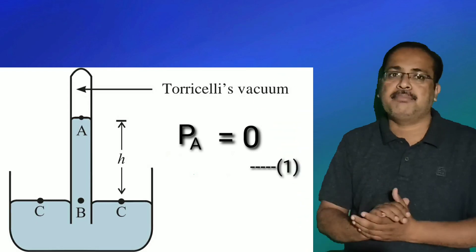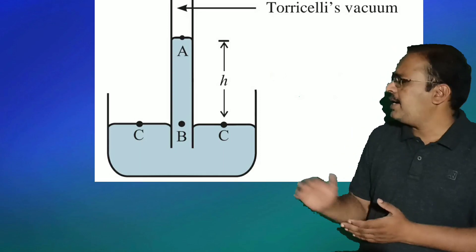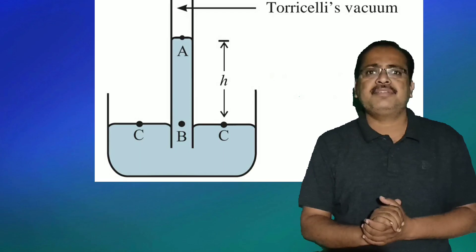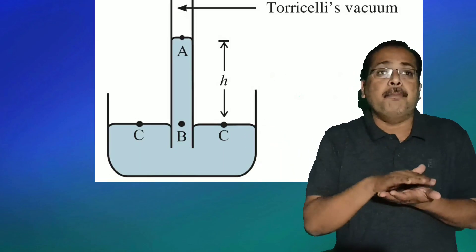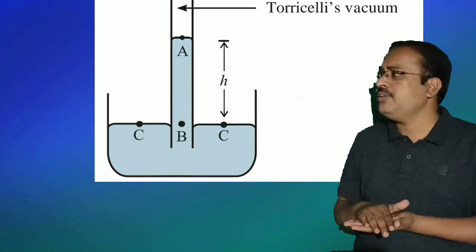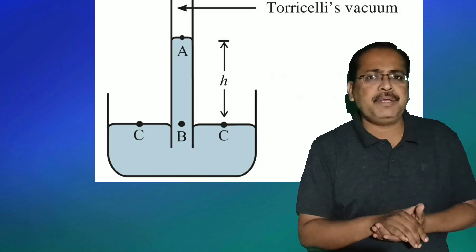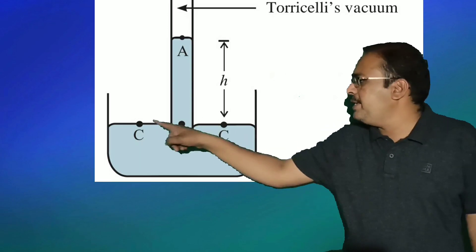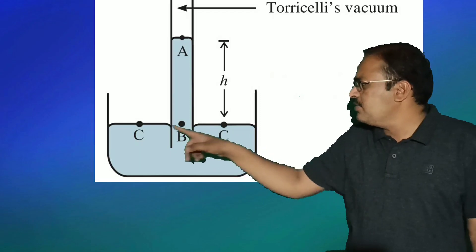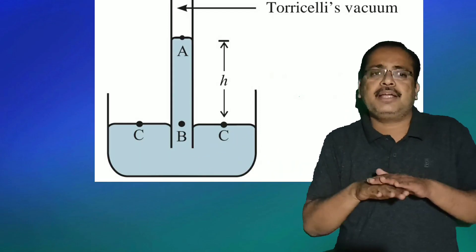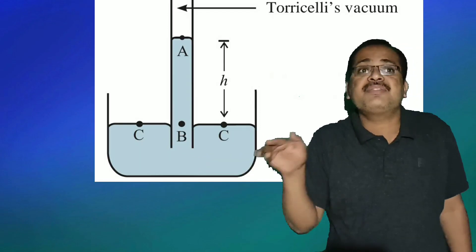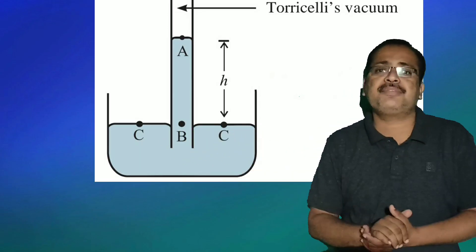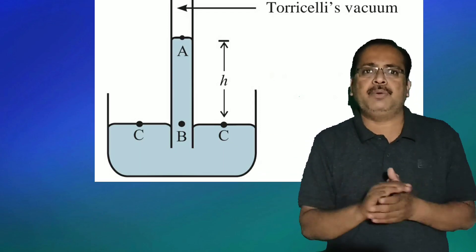Let us consider two more points: point C, which is on the mercury surface in the dish, and point B, which is inside the tube. Points B and C are at the same horizontal level — C is on the dish and B is inside the tube.